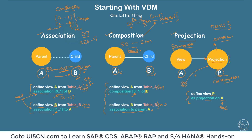To summarize: association, composition, and projection are all kinds of relationships. Composition is a special form of association where the child cannot exist if the parent doesn't exist. Projection is used to expose all the features of a particular CDS view and add more project-specific annotations. We use a projection CDS view for this purpose. Now let's come back to our VDM discussion and look at the artifacts we are going to use.